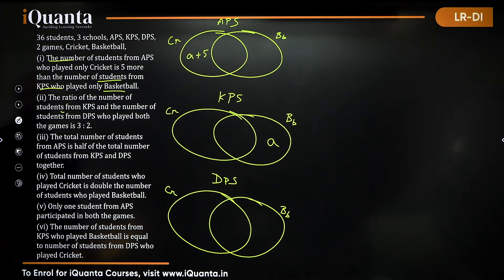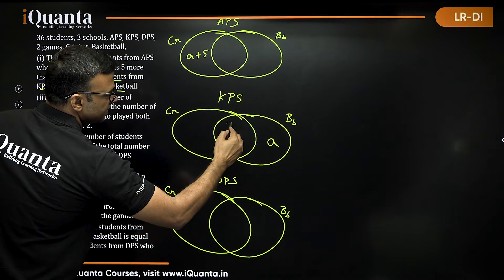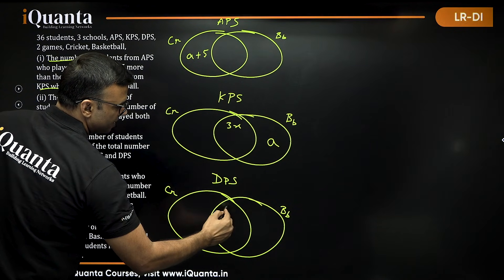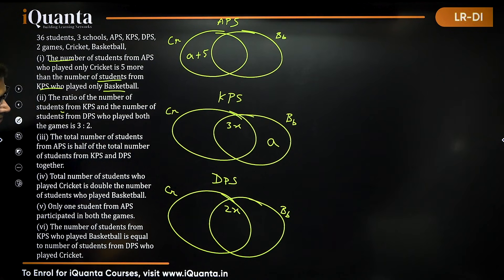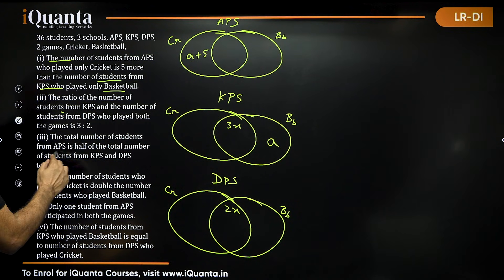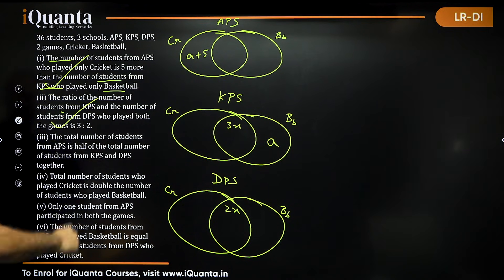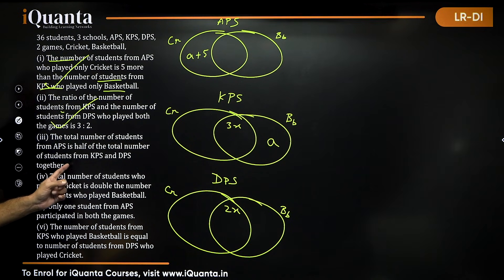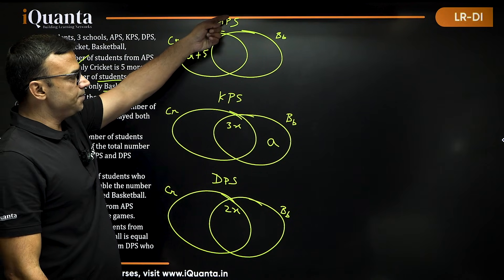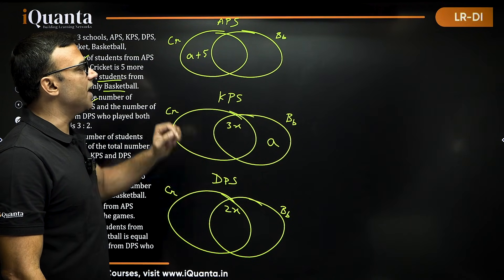The ratio of the number of students from KPS and DPS who played both the games is 3 to 2. So if I say KPS both is 3x, then DPS both will be 2x. The total number of students from APS is half the total number of students from KPS and DPS together. So KPS and DPS together will be twice of APS.